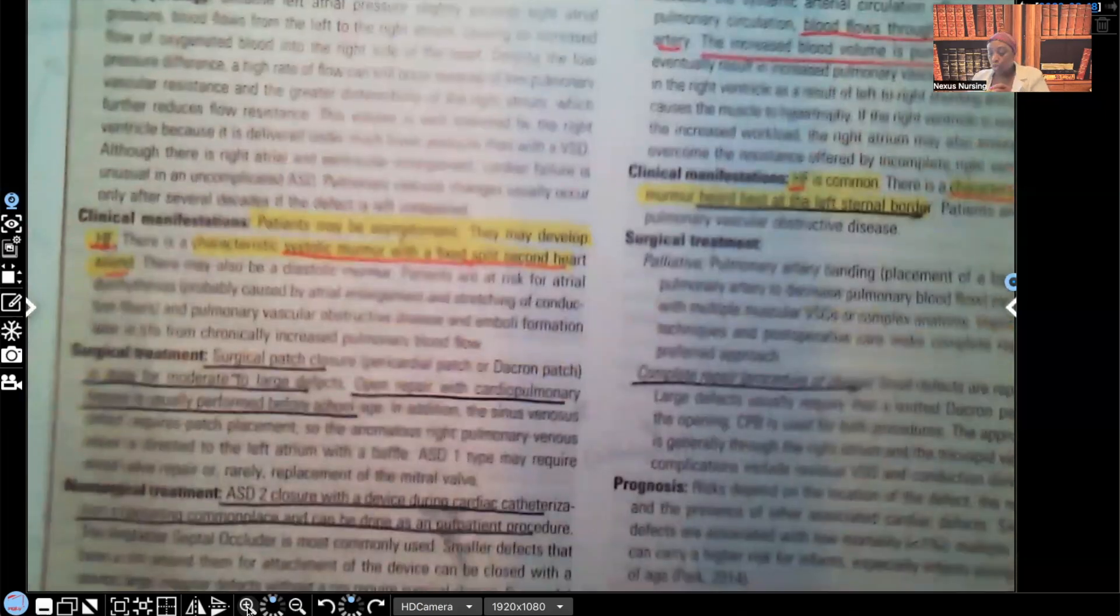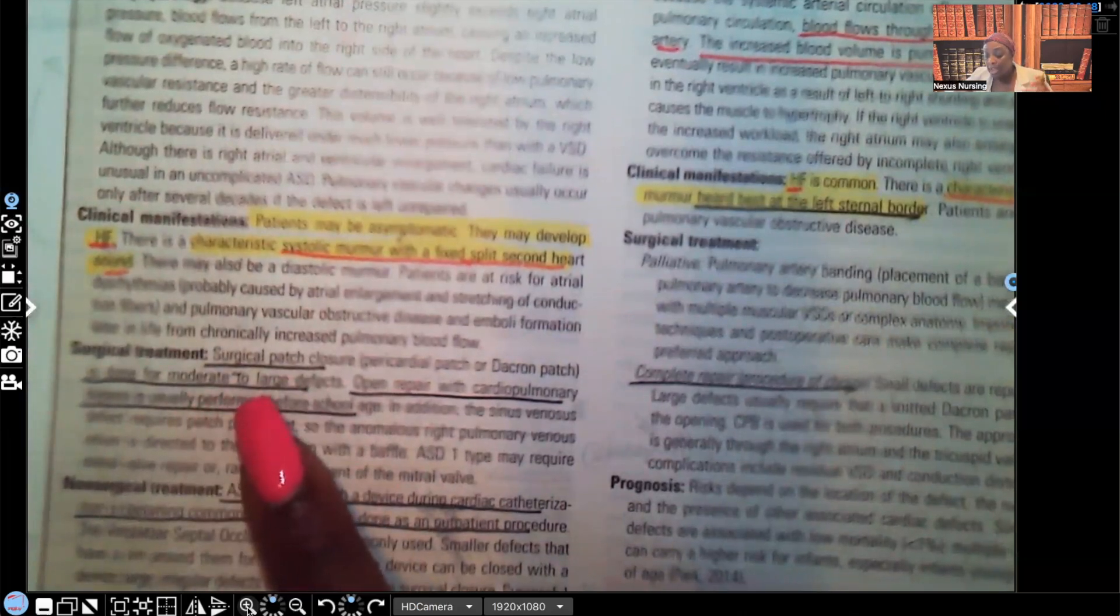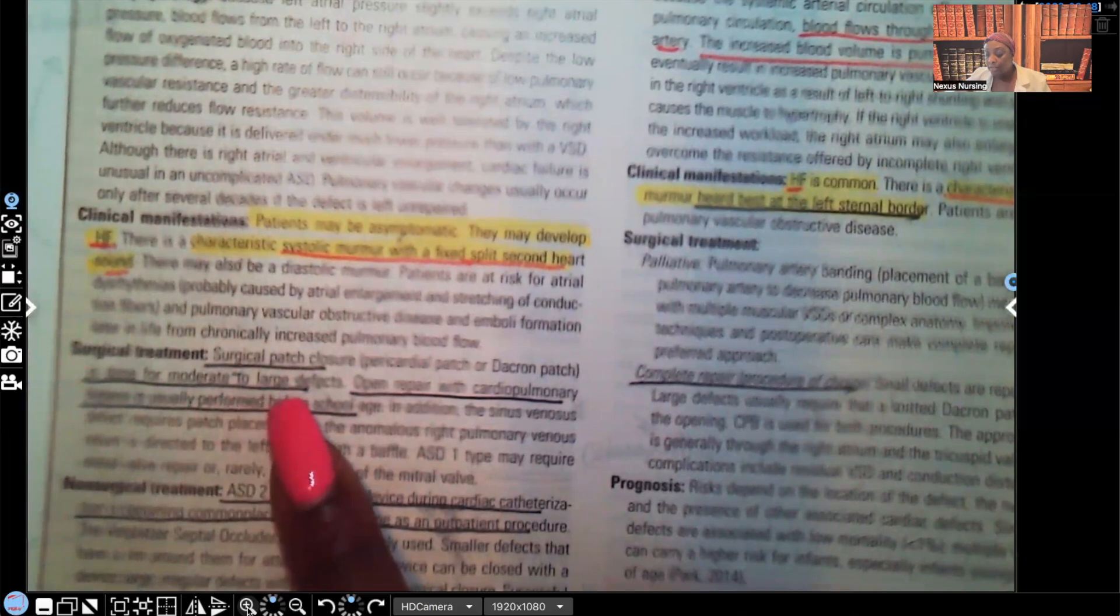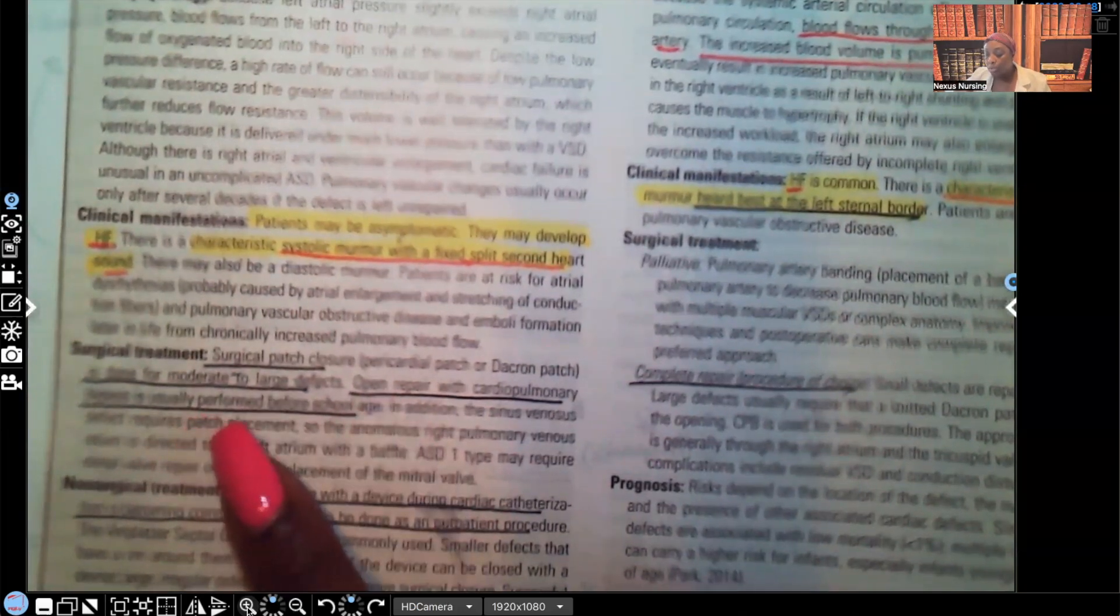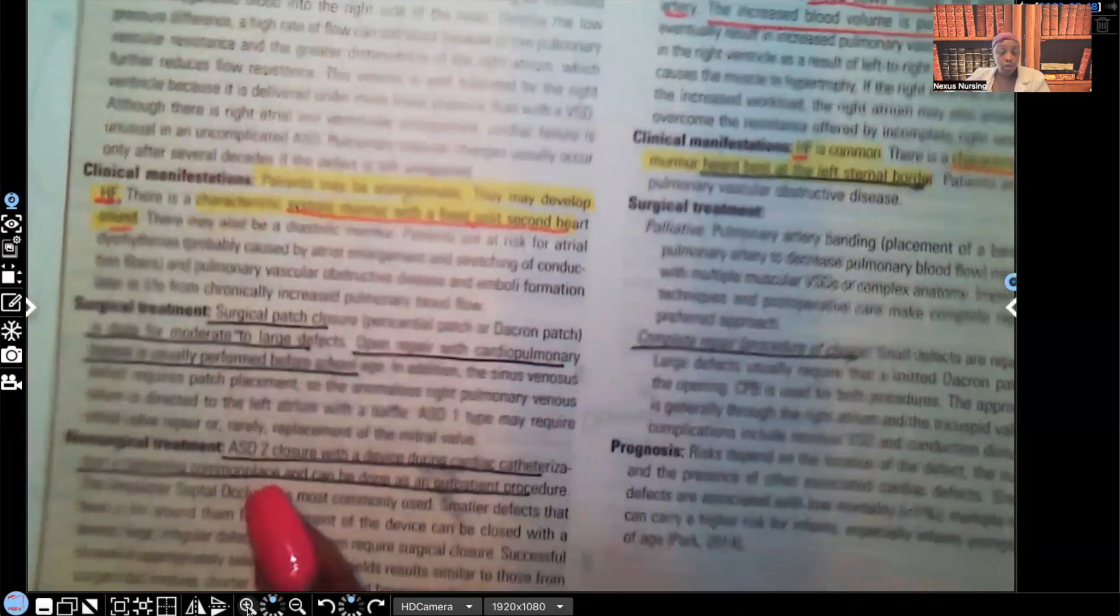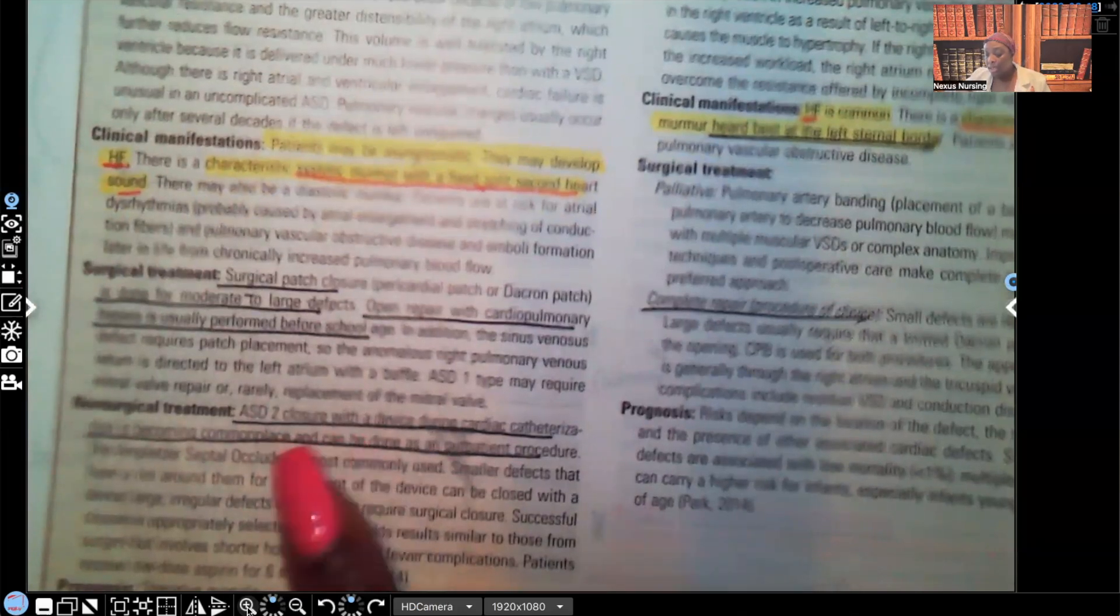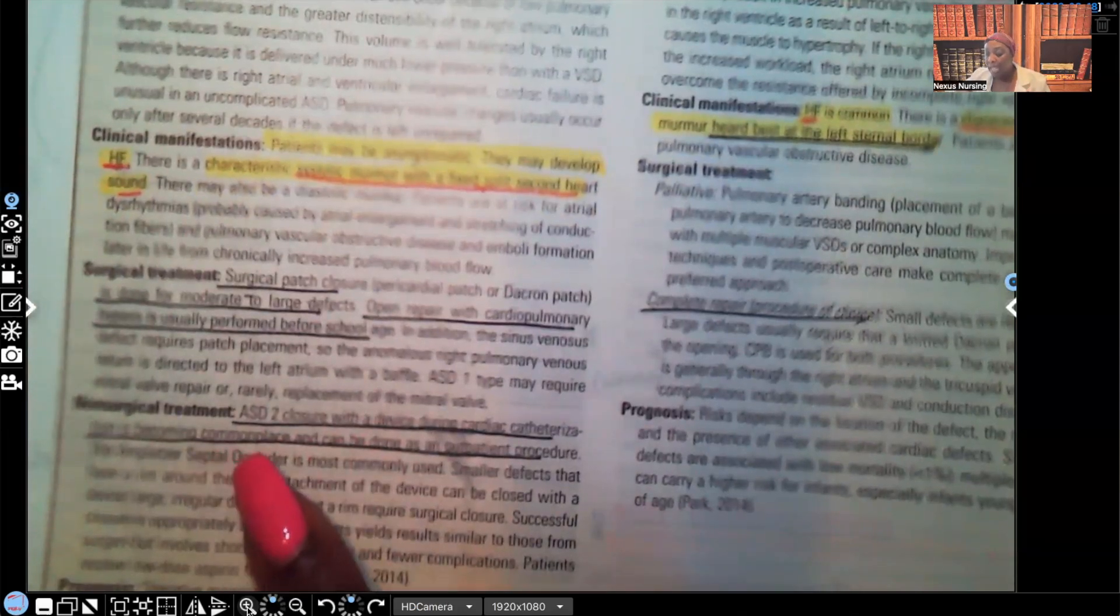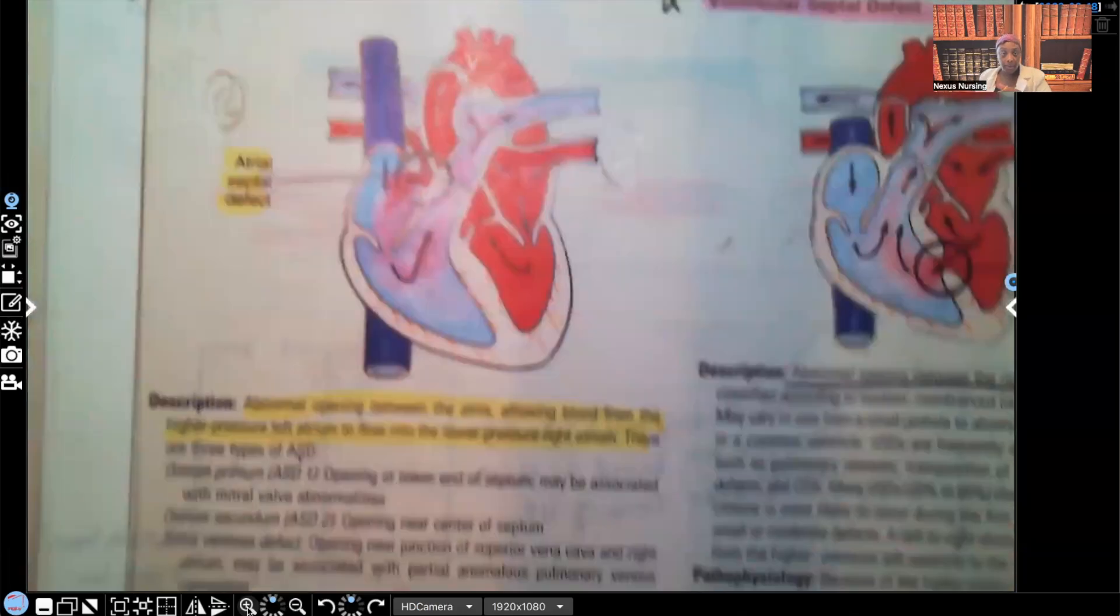Surgical treatment: surgical patch closure is done for moderate to large defects. Open repair with cardiopulmonary bypass is usually performed before school age. Non-surgical management: ASD closure with a device during cardiac catheterization is becoming commonplace and can be done as an outpatient procedure. That's your atrial septal defect in a nutshell.